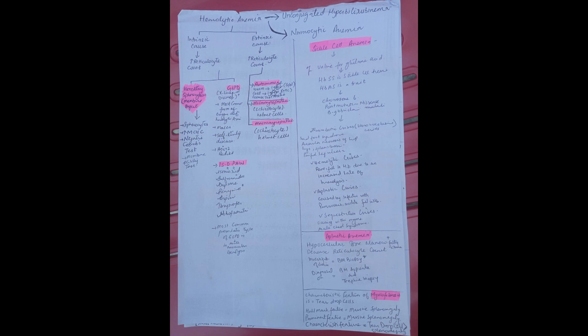HbSS is the sickle cell anemia and HbAS is a trait. It is present in chromosome number 6. Point mutation or missense mutation occurs here. Beta globin chain is affected.